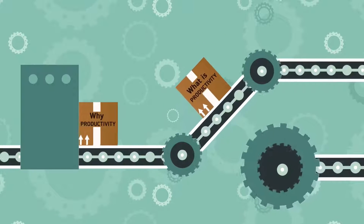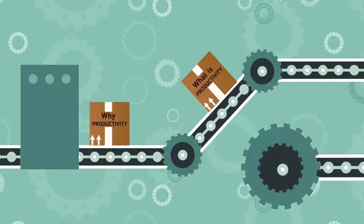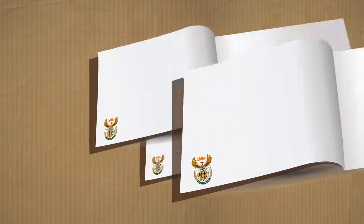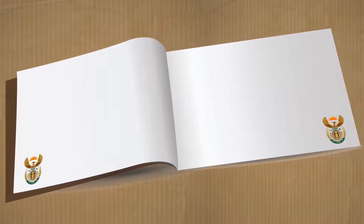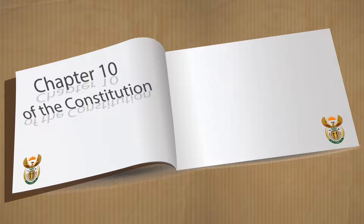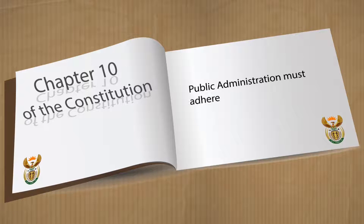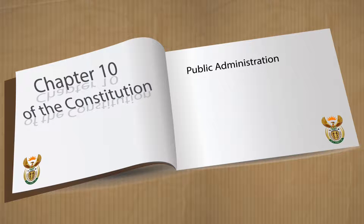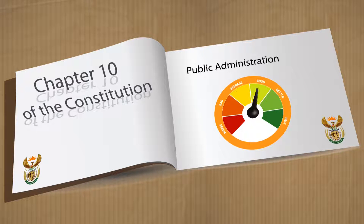Why productivity? Advancing productivity is a constitutional imperative. Chapter 10 of the Constitution specifically determines that public administration must adhere to the efficient, economic, and effective use of resources. This means that public administration must strive towards a high level of productivity.